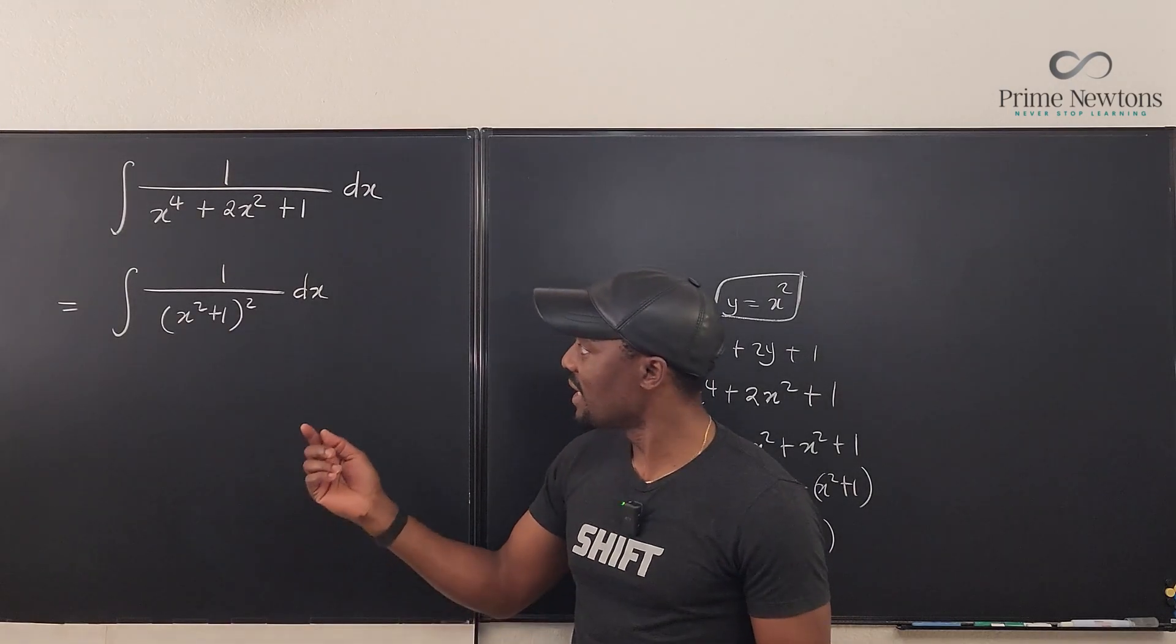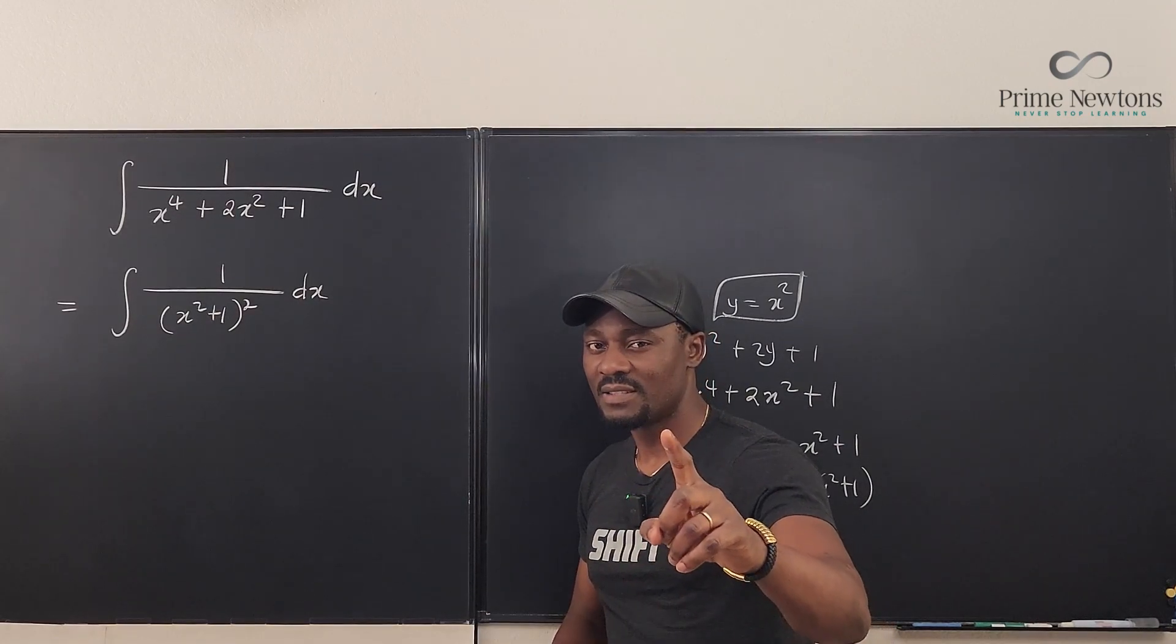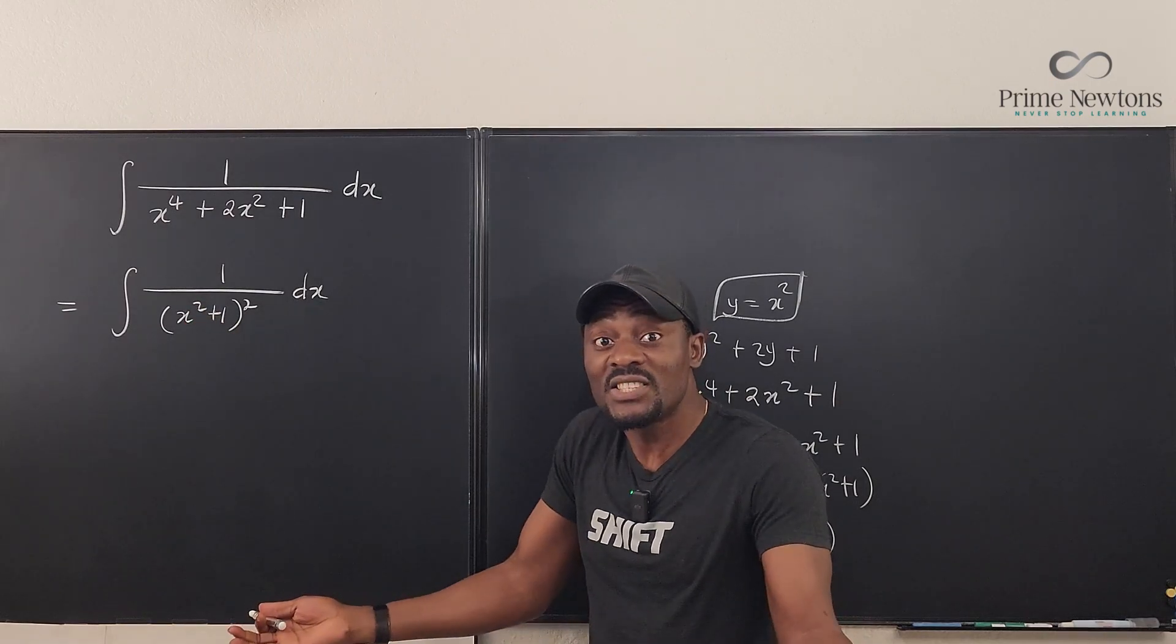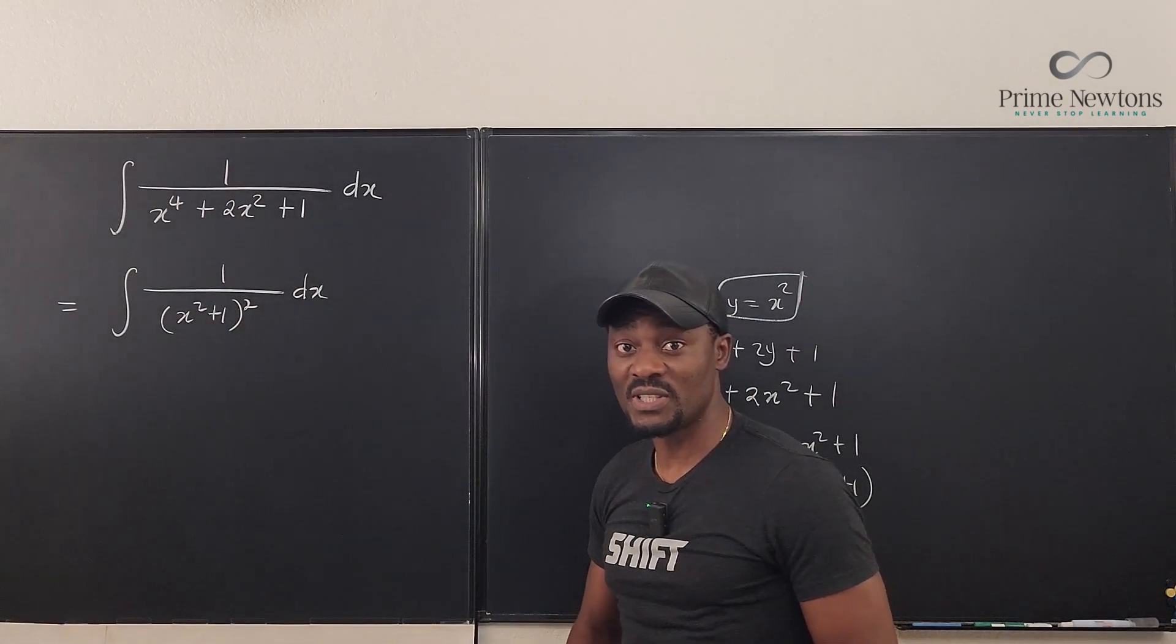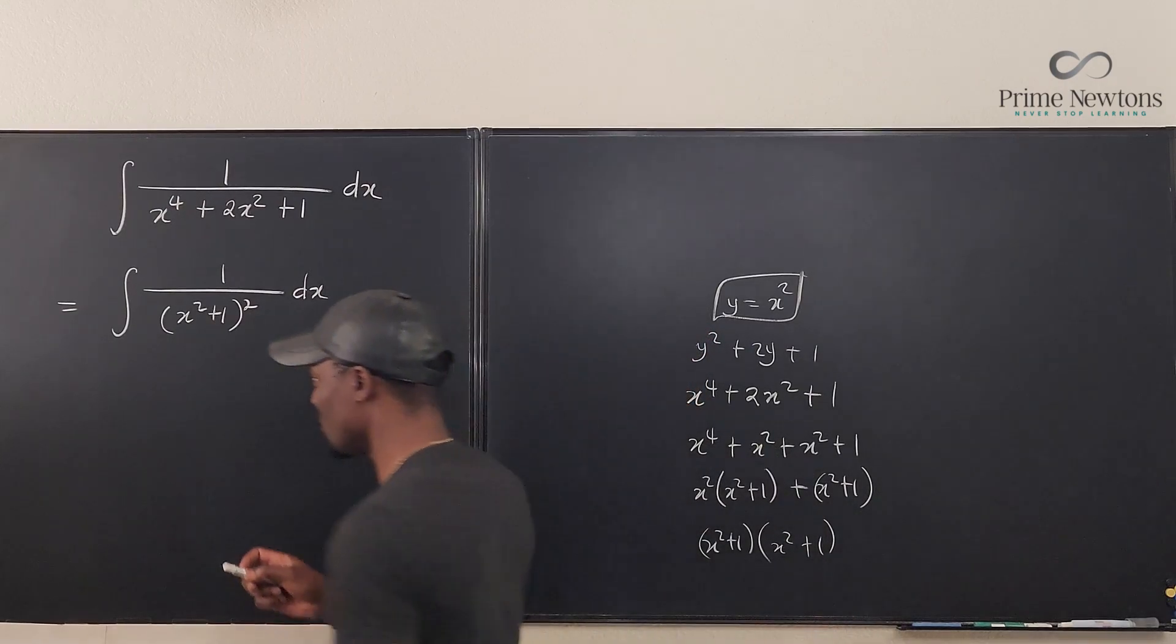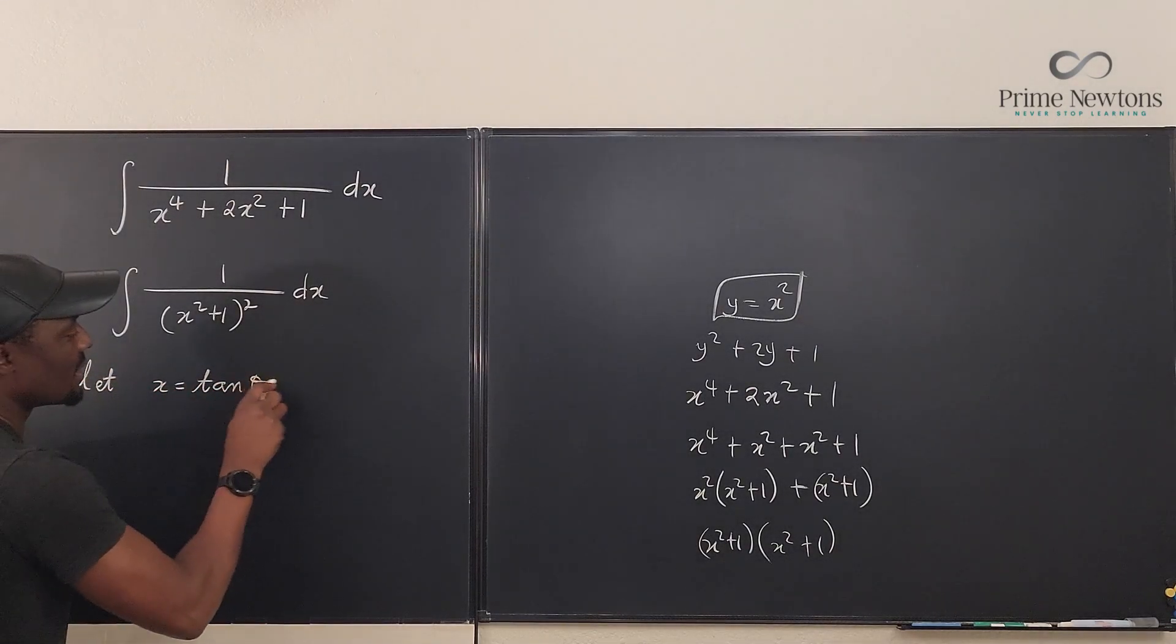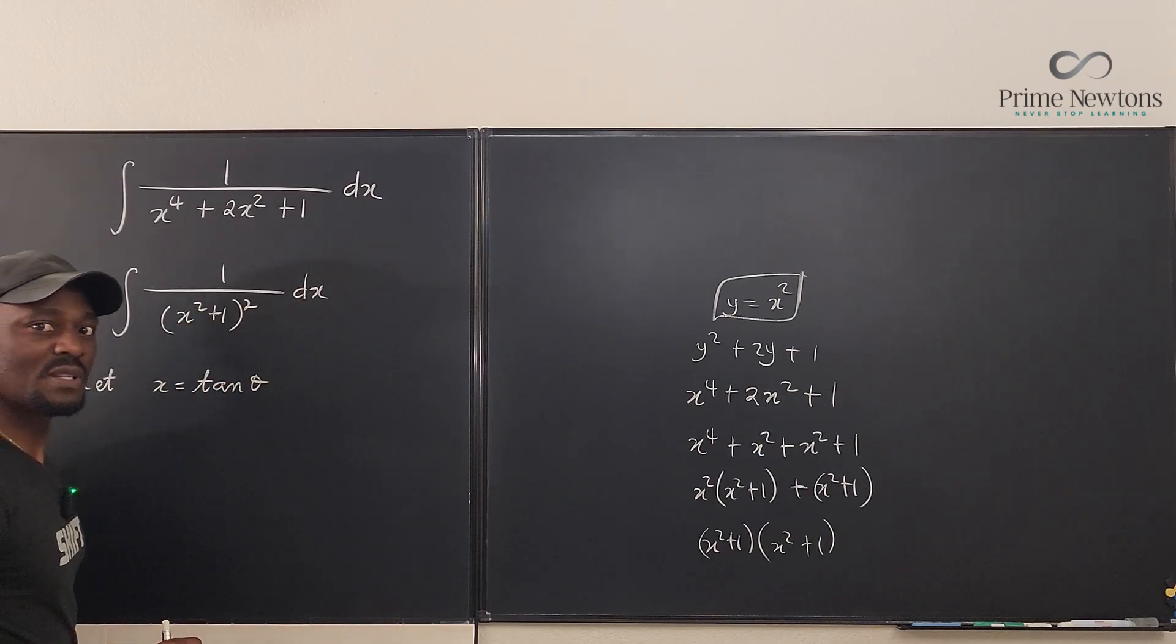There are many ways, but I say what trig identity has something squared plus 1? Well, it is tangent. So we're going to assume that x is equal to tangent of theta, and then we'll see what happens. This is gonna work out. Let's see. So we say let x be equal to tan θ because we know that tan^2 θ + 1 is going to be sec^2 θ, right?